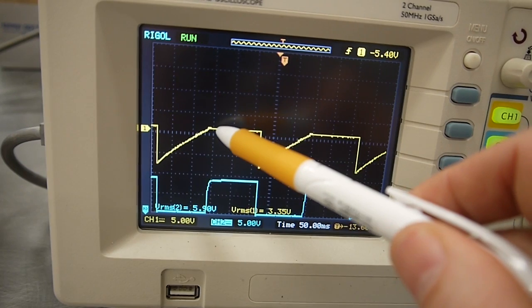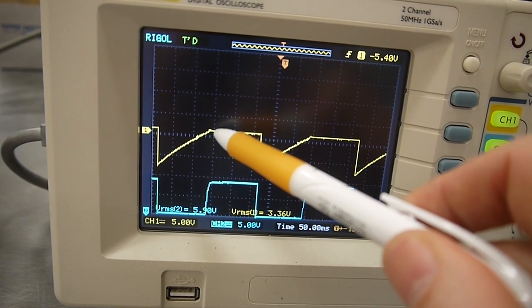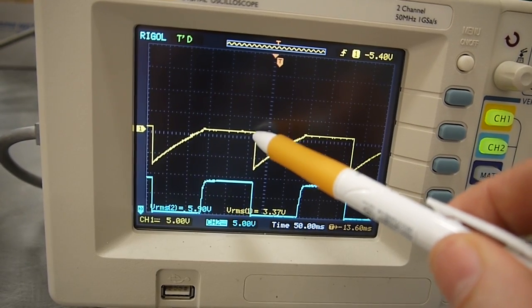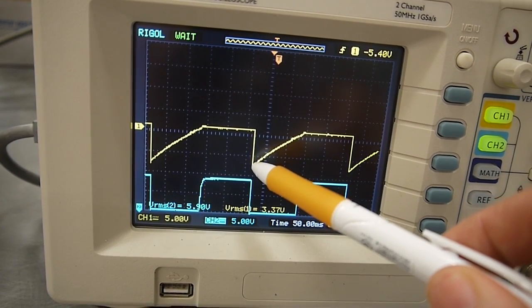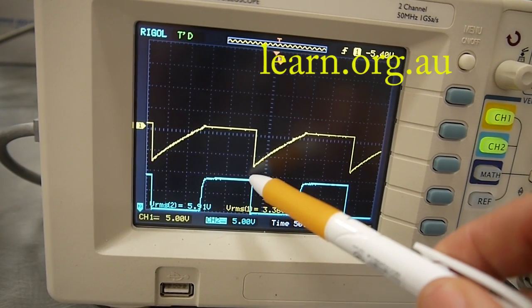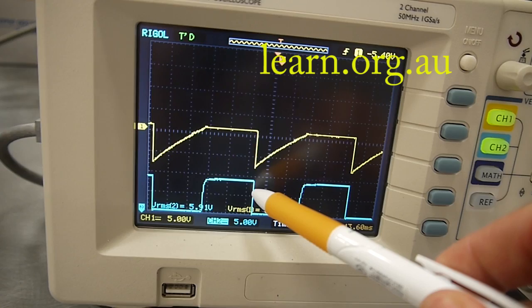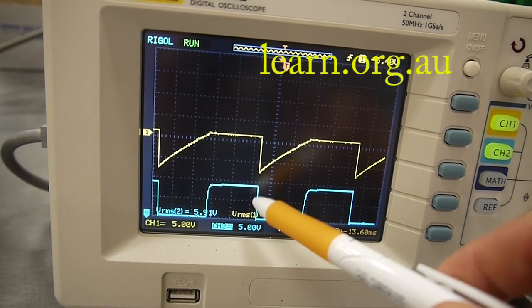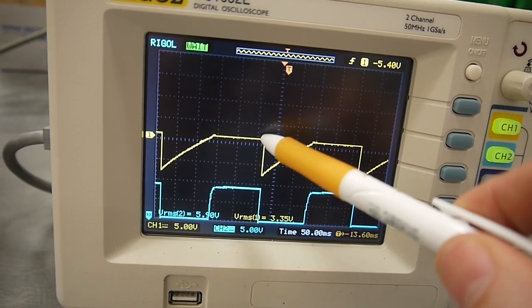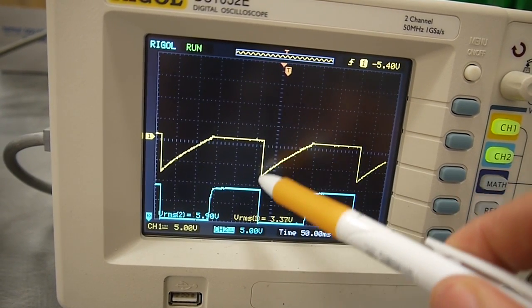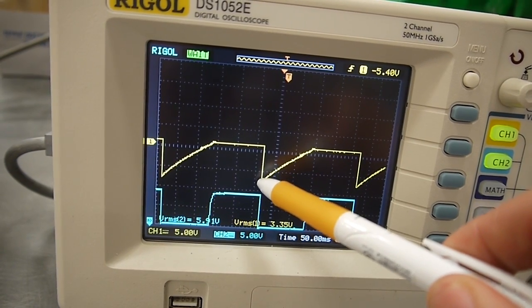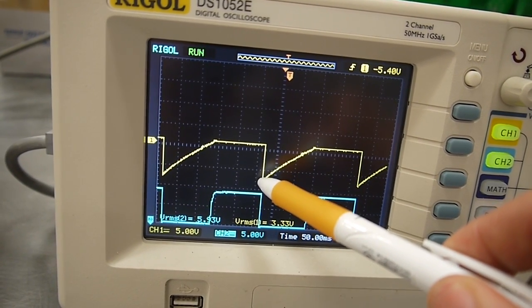So you can see the base on this particular transistor is going from about 0.6 of a volt and dropping down to minus 9 volts. And that's because the charge that was in the capacitor, which was tied between that base and the collector on the opposite transistor, when the transistor switched down to 0, that charge had to go somewhere and it's resulted in a negative 9 volts approximately across on the base of the opposite transistor.